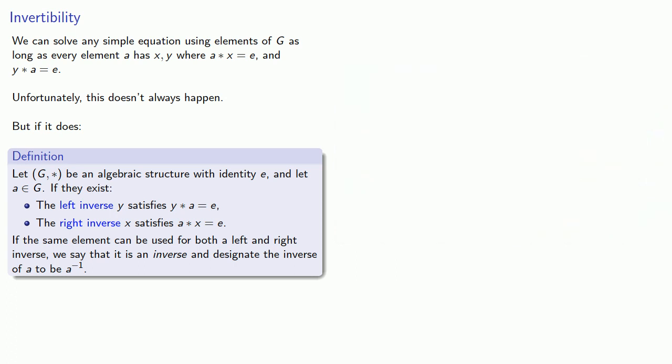Sometimes the same element could be used for both a left and a right-inverse. And if that happens, we say that it is an inverse, no left, no right, and designate the inverse of A to be A to the power minus 1. Remember, there are only so many symbols, and so while this appears to be an exponent, you don't want to think about this as 1 over A. It's the inverse of A.